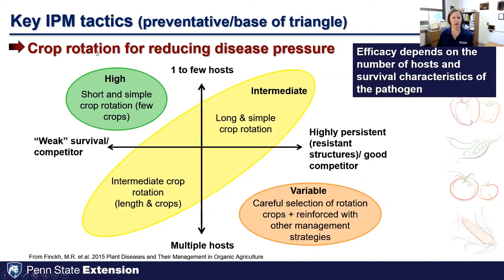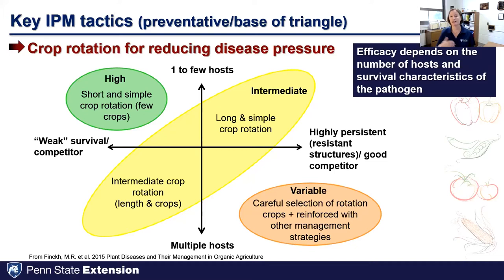Crop rotation for reducing soil-borne diseases can be challenging depending on the pathogen. White mold (Sclerotinia) has a really wide host range, making it more challenging to manage with crop rotation because there are fewer crops that will help reduce that pathogen population. By contrast, pathogens that only go to a couple of hosts allow you to rotate more easily — you could rotate out of tomato and go to cucumber or broccoli before going back in. Think about crop family as you devise crop rotations for disease management.